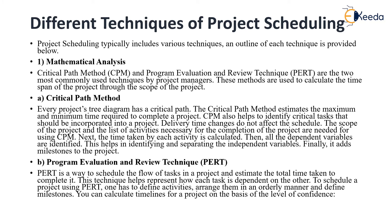Next, the time taken by each activity is also calculated and all the dependent variables are identified. This helps in identifying and separating the independent variables, and finally it adds the milestones to the project. Project Evaluation and Review Technique is a process in which we schedule the flow of tasks in a project and estimate the total time taken to complete. This technique helps represent how each task is dependent on the other.